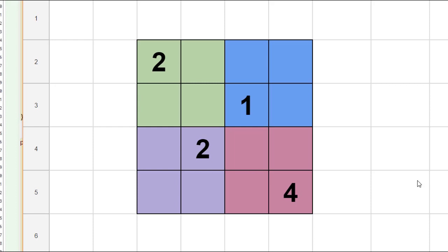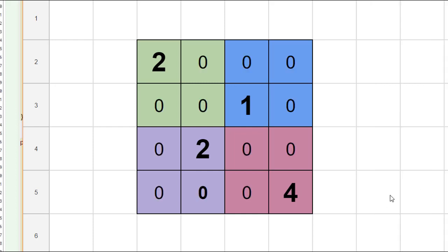We're going to take a different approach called backtracking. The first thing we're going to do is replace all the blank squares with zeros. The reason we're doing this is that when we enter the board into a computer, we're going to need numbers to represent each of the squares.